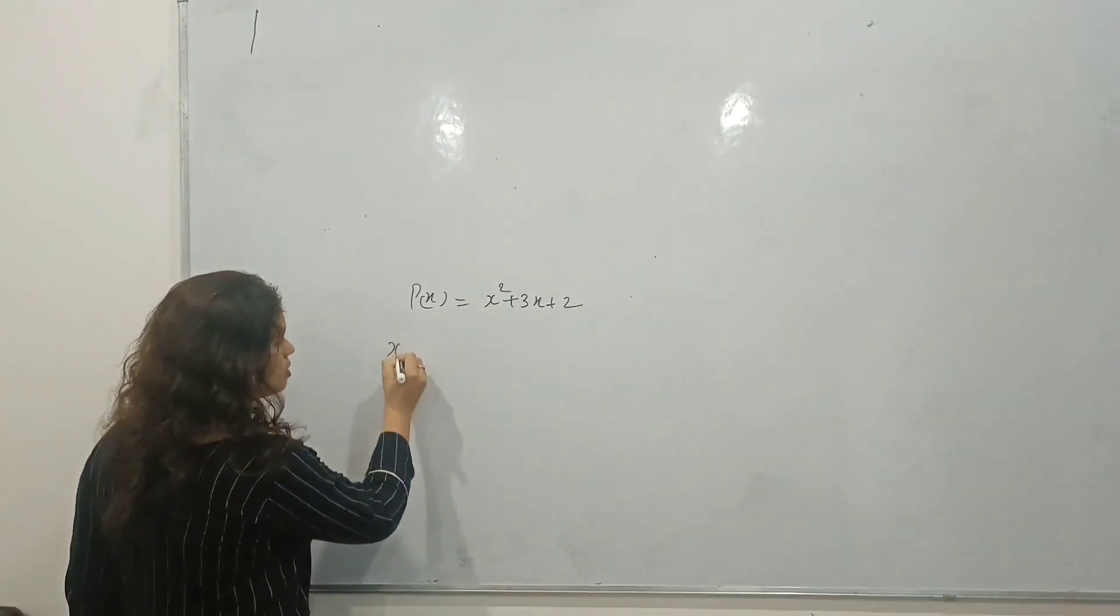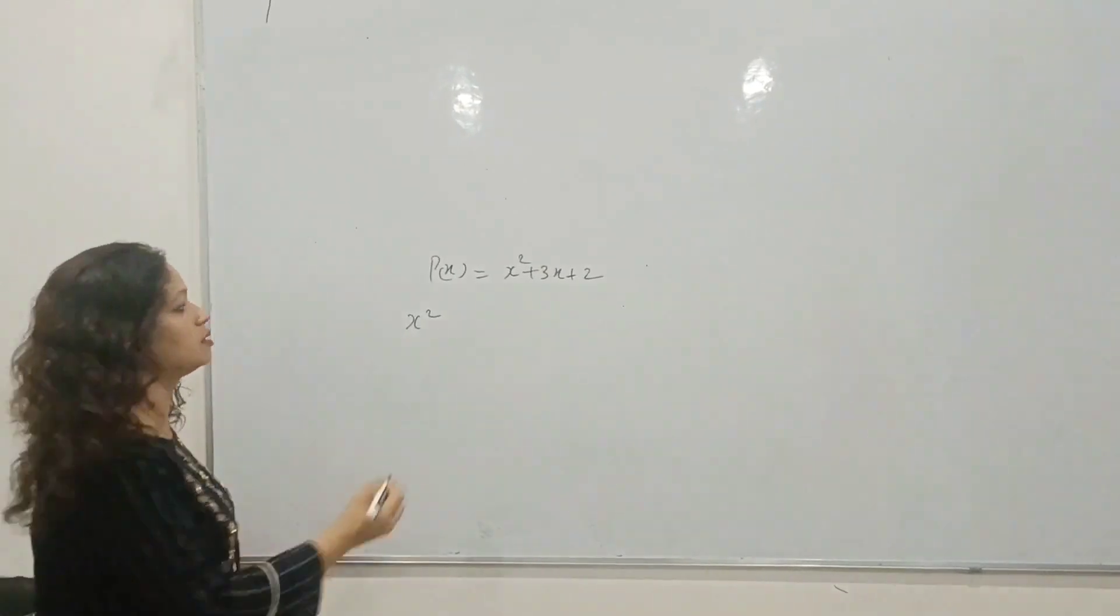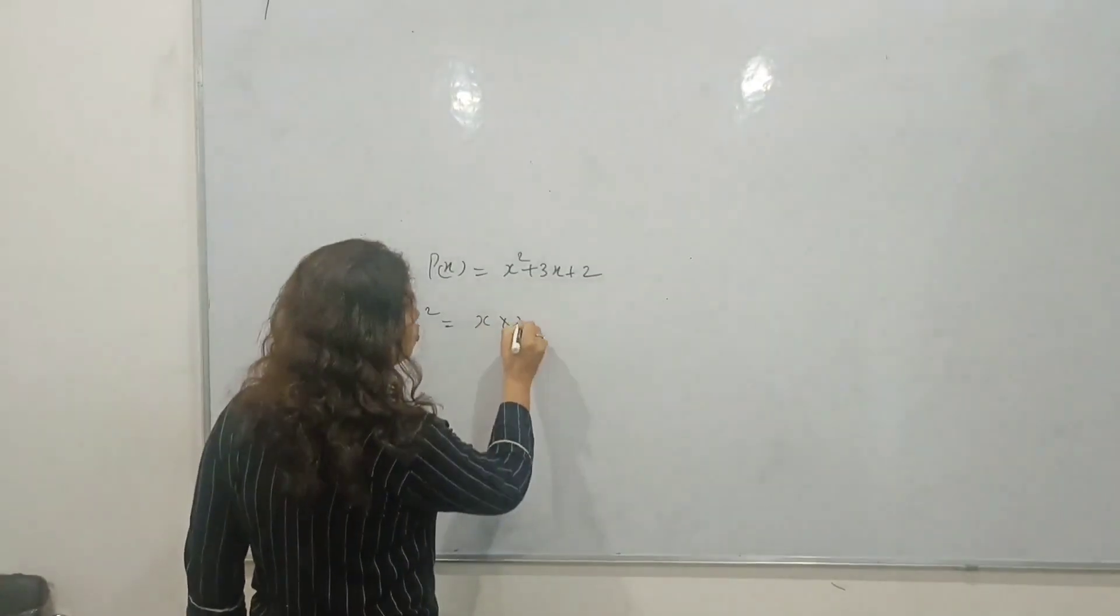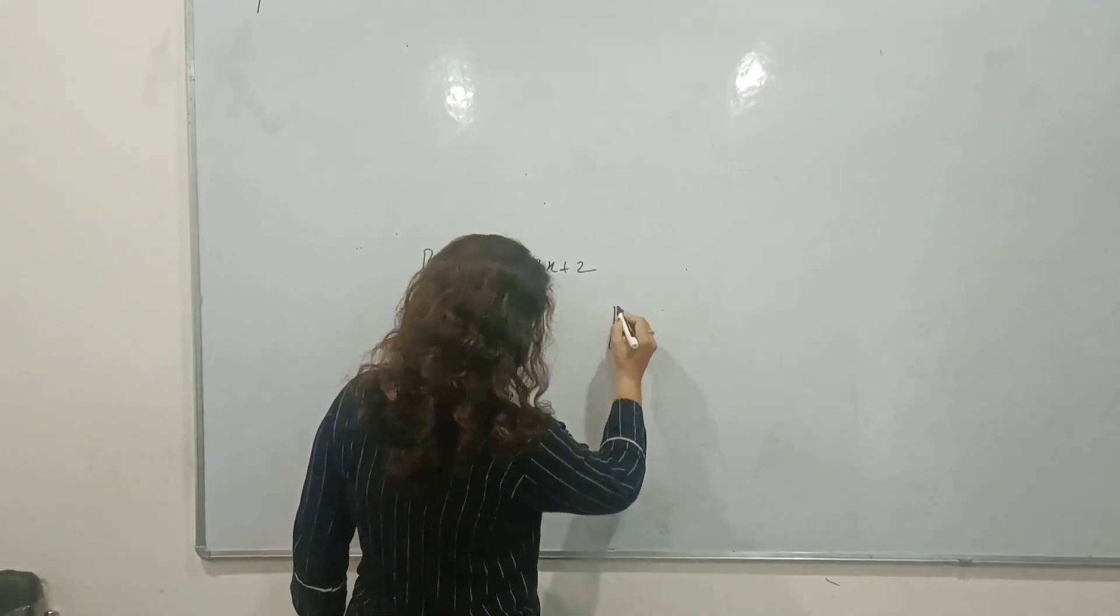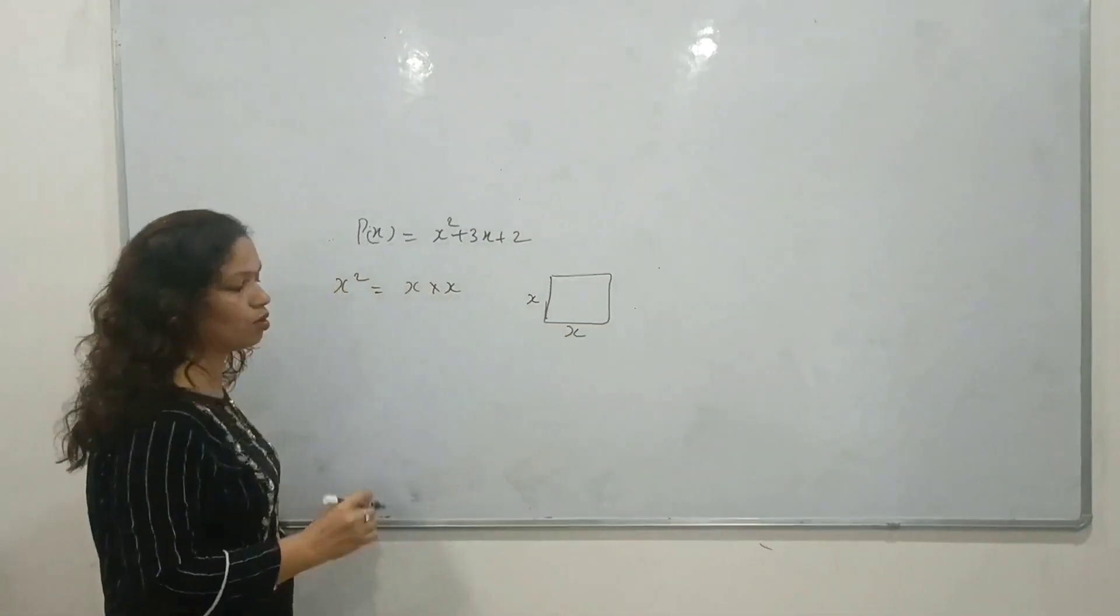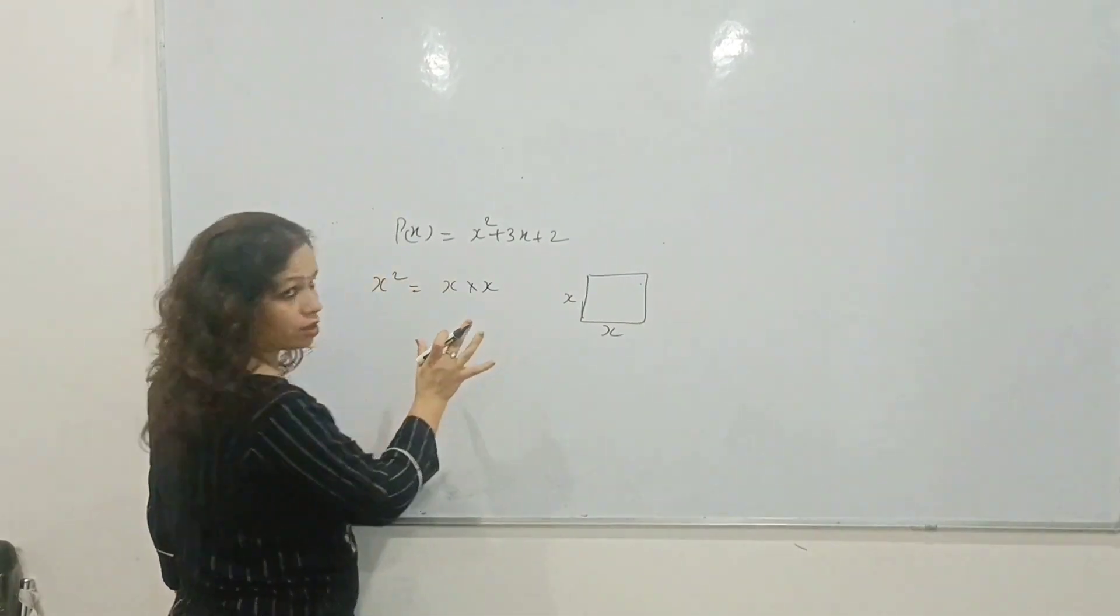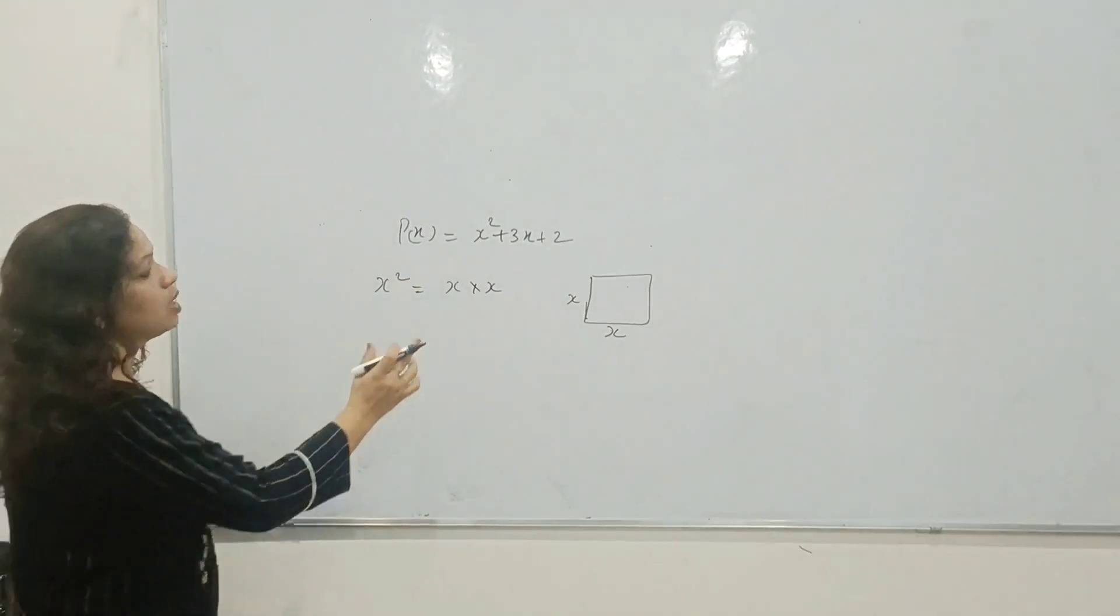Your first term is x squared. Let's draw the first term. You can see that x squared equals x times x. If you make a square, the length of the square is x. All the sides are equal in the square, so x times x is related to the area of the square.